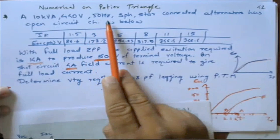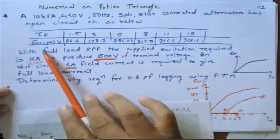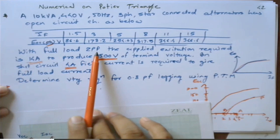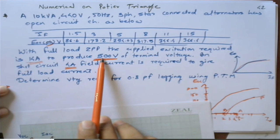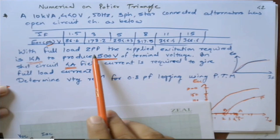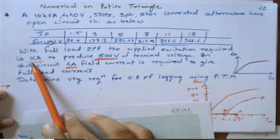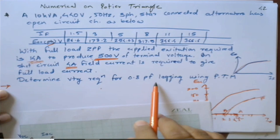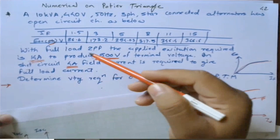The numerical statement: a 10 kVA, 440 volt, 50 hertz, three-phase star-connected alternator has open circuit characteristics given as readings of field current (If) versus open circuit EMF (Eoc) in per-phase quantities. With full load at zero power factor, the excitation required is 14 ampere to produce 500 volt. On short circuit, 4 ampere field current is required for full load current. Determine the voltage regulation for 0.8 power factor lagging using the Potier Triangle method.